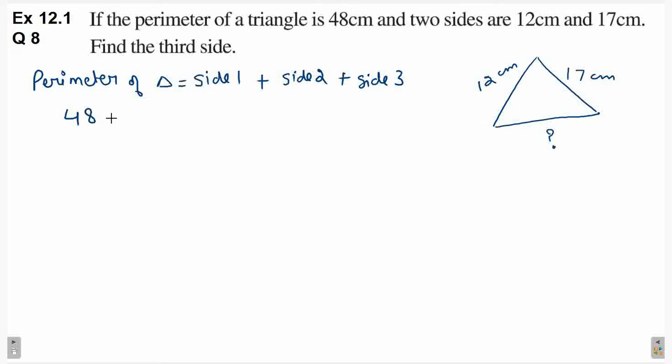So perimeter is 48, so this is equal to side 1 and side 2 which are given. The 2 sides are 12 plus 17 plus side 3. So 48 is equal to, 2 plus 7 is 9, 1 plus 1 is 2, so 29 plus side 3.